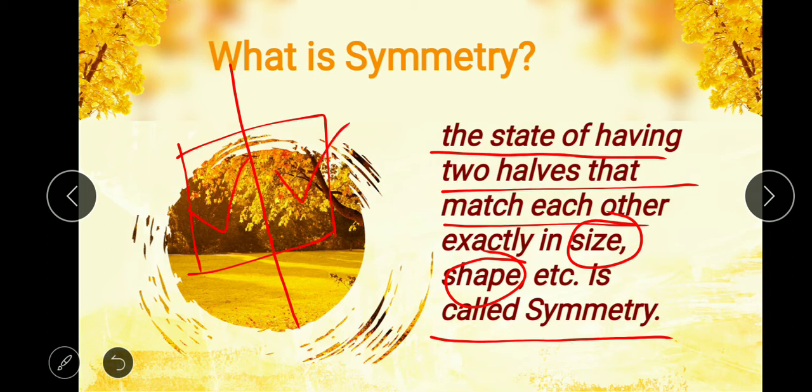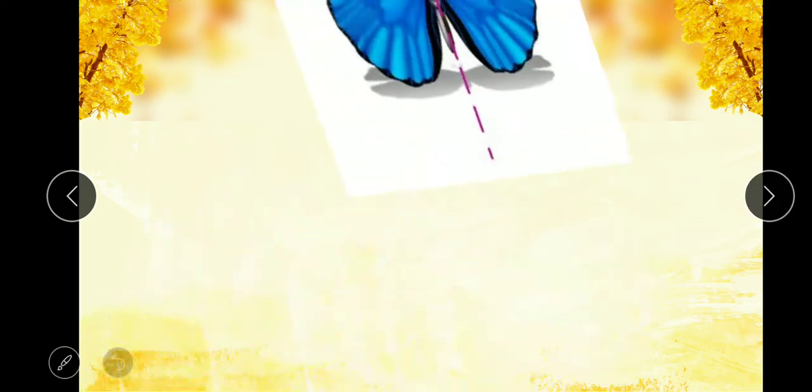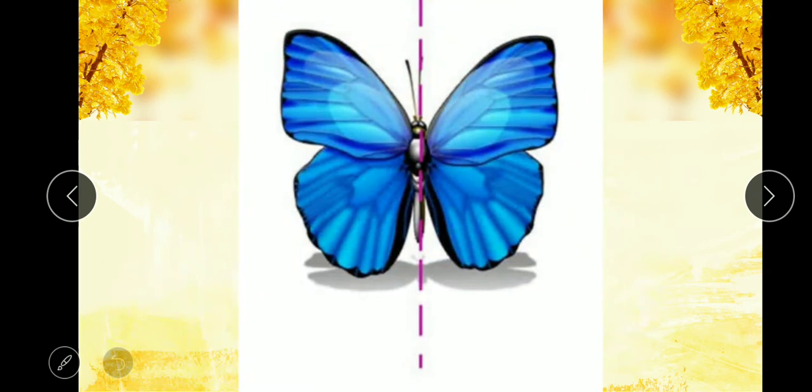Now let's make this topic more clear by taking some more examples. Here we have a butterfly. And the dotted line is dividing the butterfly into two equal parts. It is clear by seeing that one of its wings is exactly equal to the other wing. Thus we can see that yes, it is a symmetrical shape.